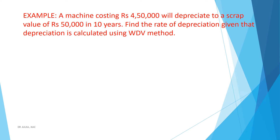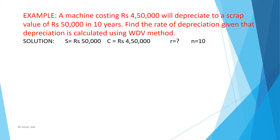In our first example, we want to calculate the rate of depreciation using the written down value method, where a machine costing Rs 4,50,000 will depreciate to a scrap value of Rs 50,000 in 10 years. In this example, S equals Rs 50,000, C equals 4,50,000, N equals 10, and we want to calculate R.